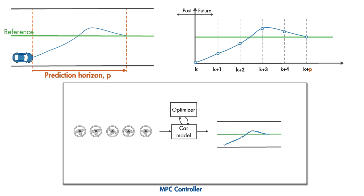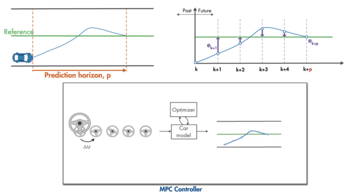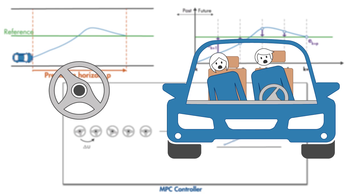By solving an online optimization problem, the MPC controller tries to minimize the error between the reference and predicted path of the car. It also tries to minimize the change in the steering wheel angle from one time step to the next, because if the steering wheel is turned sharply, the ride may become uncomfortable for the passengers, especially if their stomachs are full.